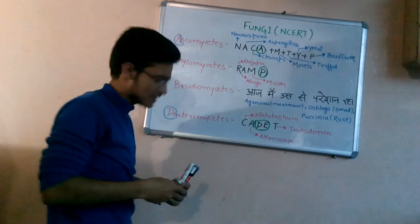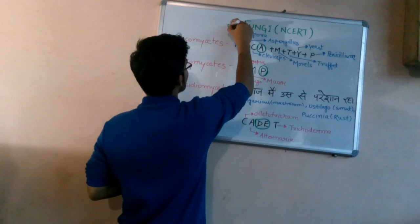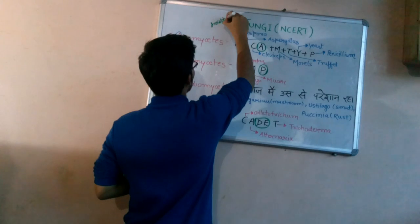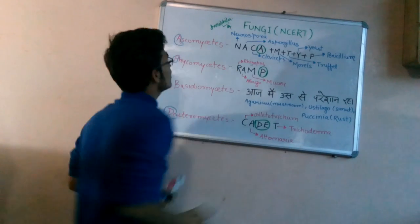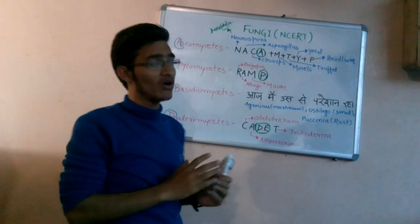N means Neurospora, and Neurospora is the Drosophila of Plant Kingdom. This is a very important point asked in many examinations. It's called Drosophila of Plant Kingdom because it is used in many experiments on plants due to its very short life cycle.